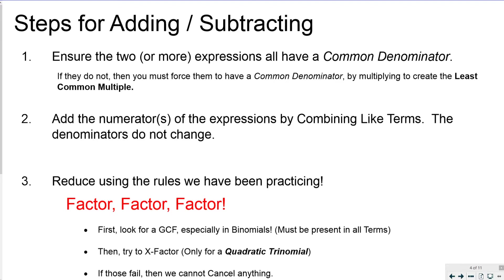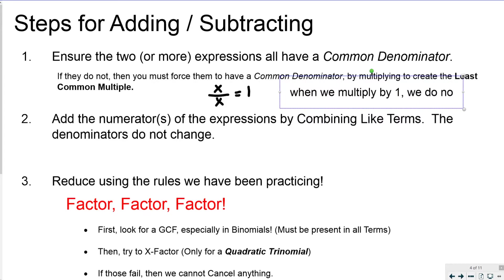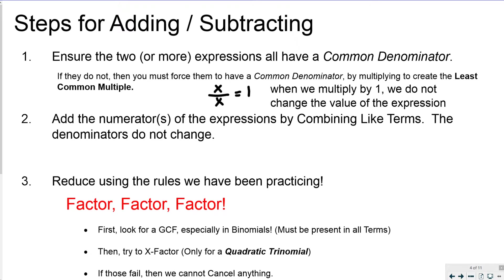The steps for adding and subtracting are very similar to other cases, just with more detail. First, make sure all expressions have common denominators before you add or subtract. If they do not, you have to force a common denominator by multiplying the top and bottom by an equivalent fraction. When I say this, I mean if I multiply the top by x, I need to multiply the bottom by x too, because that expression equals 1. Multiplying by 1 does not change the value of the expression — it simply rewrites it.